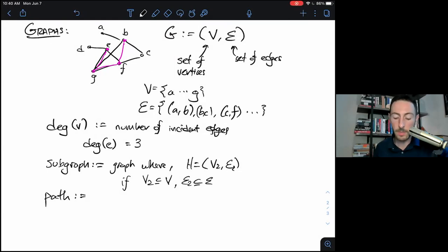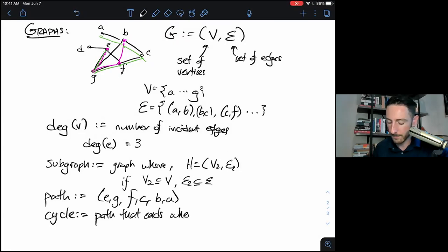A path is just a sequence of vertices that are connected by edges. So for instance, e, g, f, c, b, a is a proper path. We've also got a cycle. That's a path that ends where it starts. So any set of vertices and edges that ends where it starts, I would write down this path by writing all the vertices and writing the start vertex twice for the cycle.